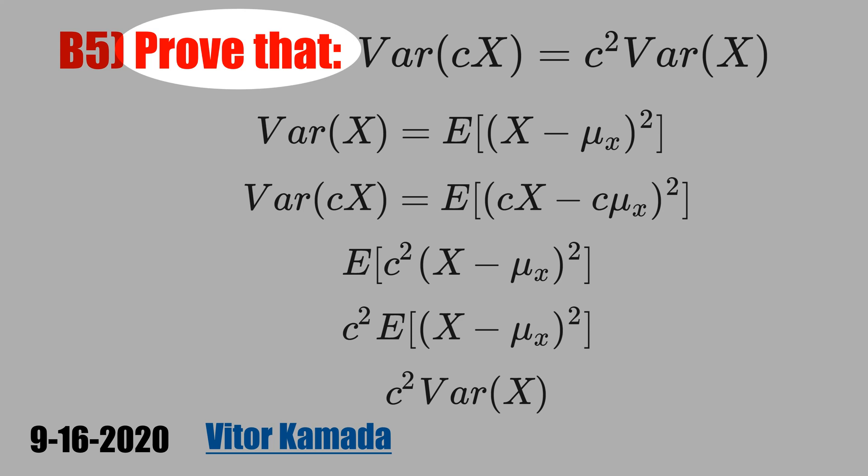In this video, let's prove that the variance of a constant c times a random variable X is equal to the square of a constant c times the variance of the random variable X. We want to show that the constant inside of the variance goes outside with a square.